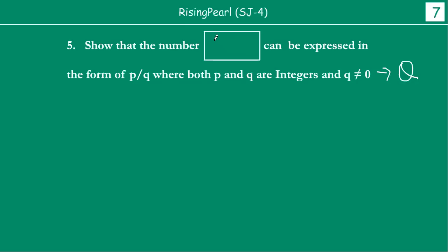Suppose we are given 0.3 bar, and we are asked if 0.3 bar can be expressed in the form p by q, where p and q are integers, q not equal to 0. So how do we do this? First, we don't know what its p by q form is, so we say, okay, let x be equal to 0.3 bar. Whenever we don't know something, we always assume that it is x, right?